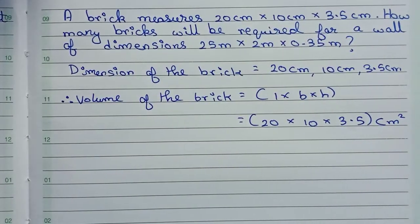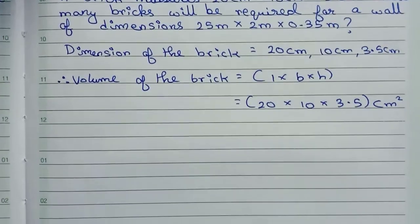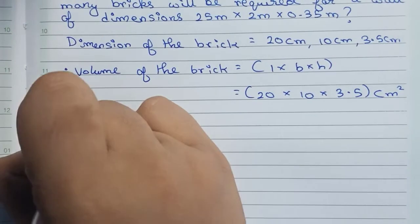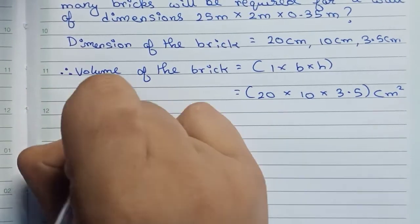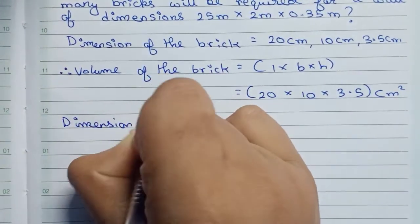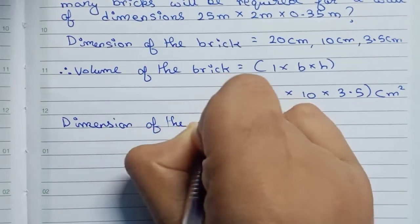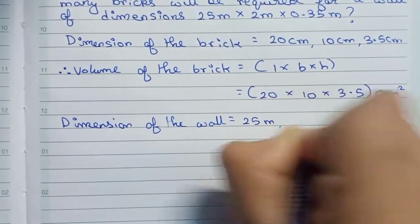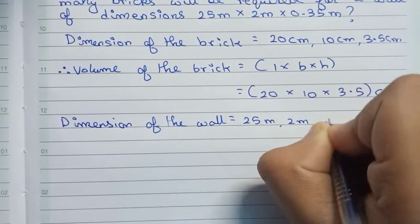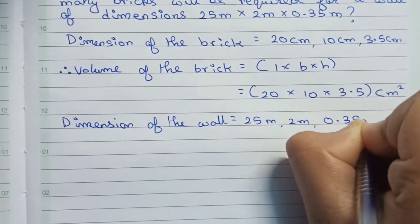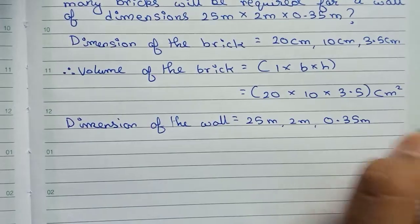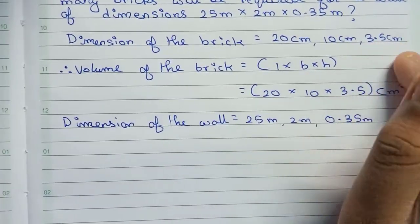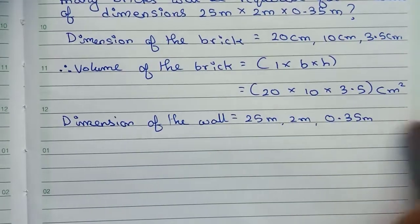Now I write dimension of the wall. It is given: 25 m, 2 m, 0.35 m. First of all, you have to convert these three measurements into centimeters. As for the brick we are using centimeters, so we cannot use two different measurements.